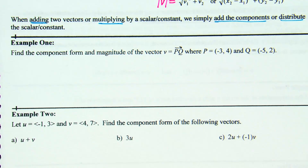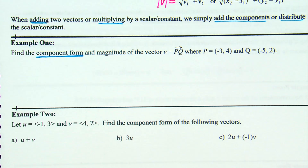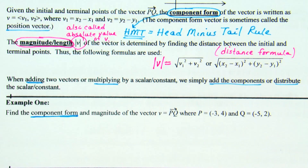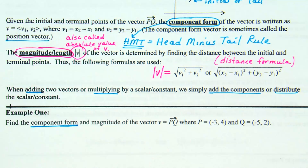Example one asks us to find the component form and magnitude of the vector V equals vector PQ, where P is the point negative 3, 4 and Q is the point negative 5, 2. Let's start with the first piece: component form. To find V1 you subtract the X's, and to find V2 you subtract the Y's — head minus tail.